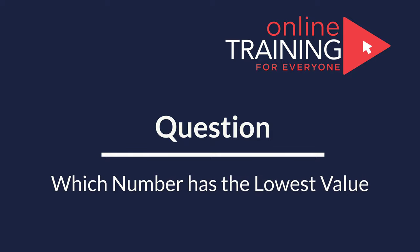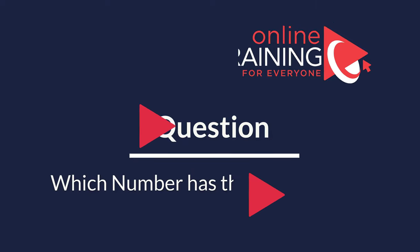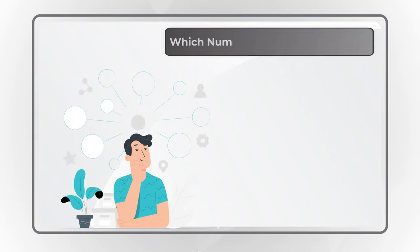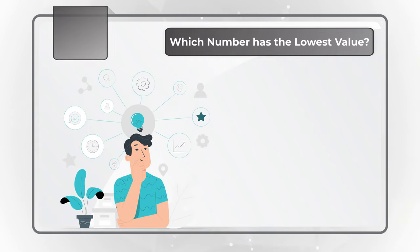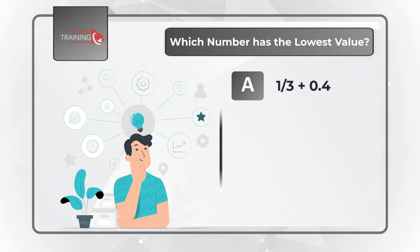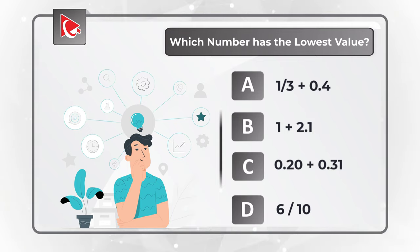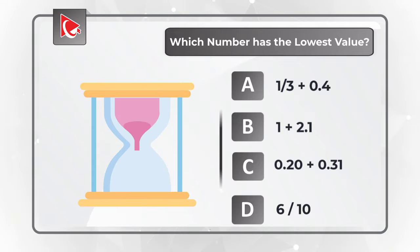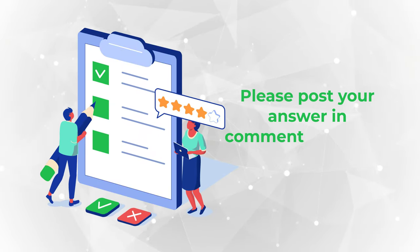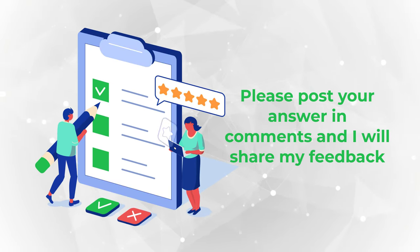Here's an interesting question where I would like you to try your skills and post the answer in the comment section of this video. Which number has the lowest value? You have 4 different choices. Choice A, 1 third plus 0.4. Choice B, 1 plus 2.1. Choice C, 0.20 plus 0.31. And choice D, 6 tenth. Do you see the answer? Give yourself a little bit of time, maybe pause this video. And once you're ready, please post your answer in the comments. This would allow me to give you my feedback. Thanks for participating and good luck!